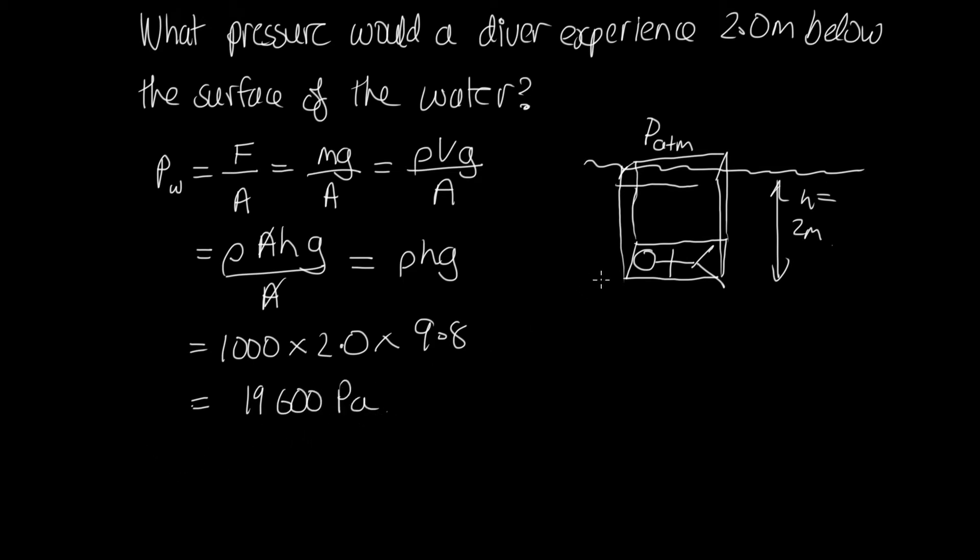So the total pressure acting upon the diver, he's got the atmospheric pressure still acting upon him, that doesn't magically disappear so it's still there. And so the total pressure is going to be the pressure due to the water plus the pressure due to the atmosphere, which we can write as 1.96 times 10 to the 4, and then atmospheric pressure which is 1.01 times 10 to the 5 pascals. So adding these we end up with 1.2 times 10 to the 5 pascals. So that's the total pressure acting upon this diver.